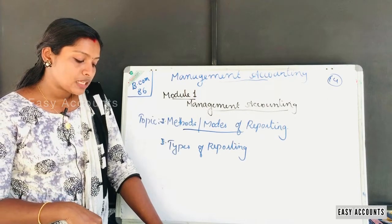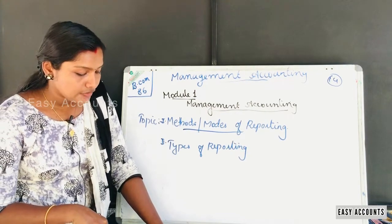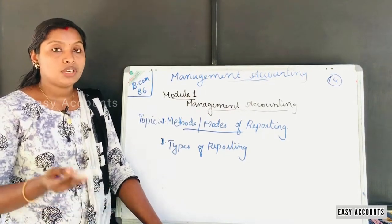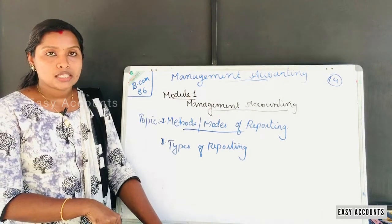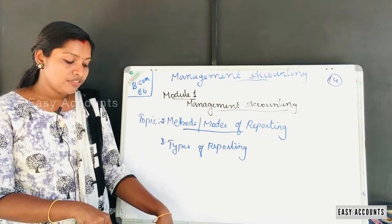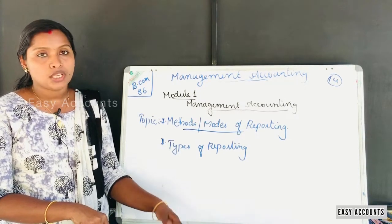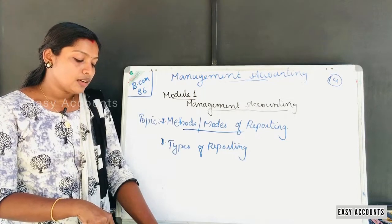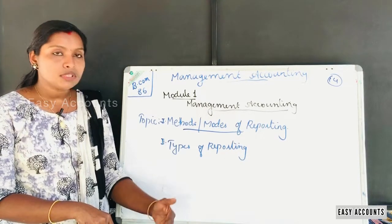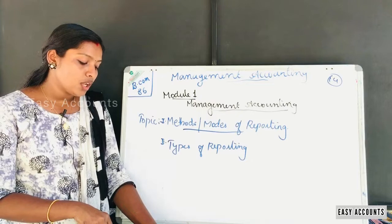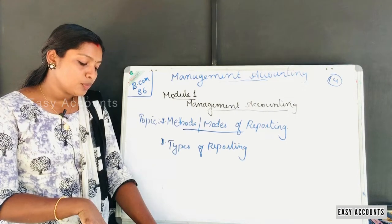Management reports can be classified according to function and user. When we classify management reports by function, we call it function-wise reporting. We select the operating report and the financial report. For operating reports, we subdivide further. First, there is the control report. The control report can be in the form of current reports and summary reports.